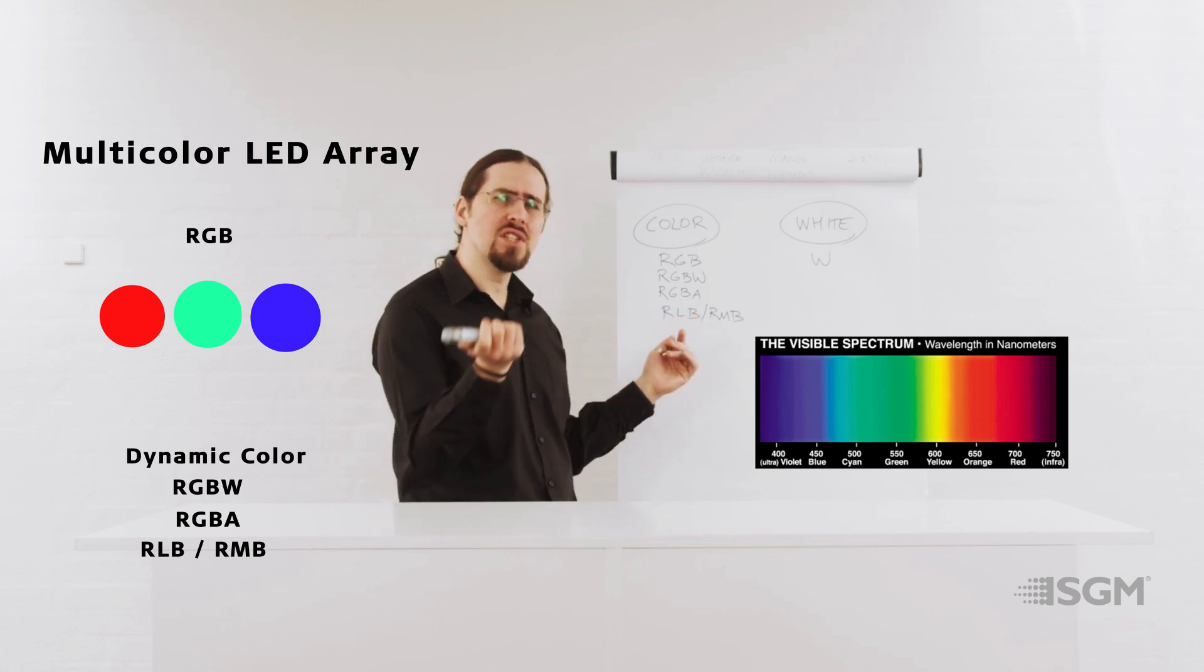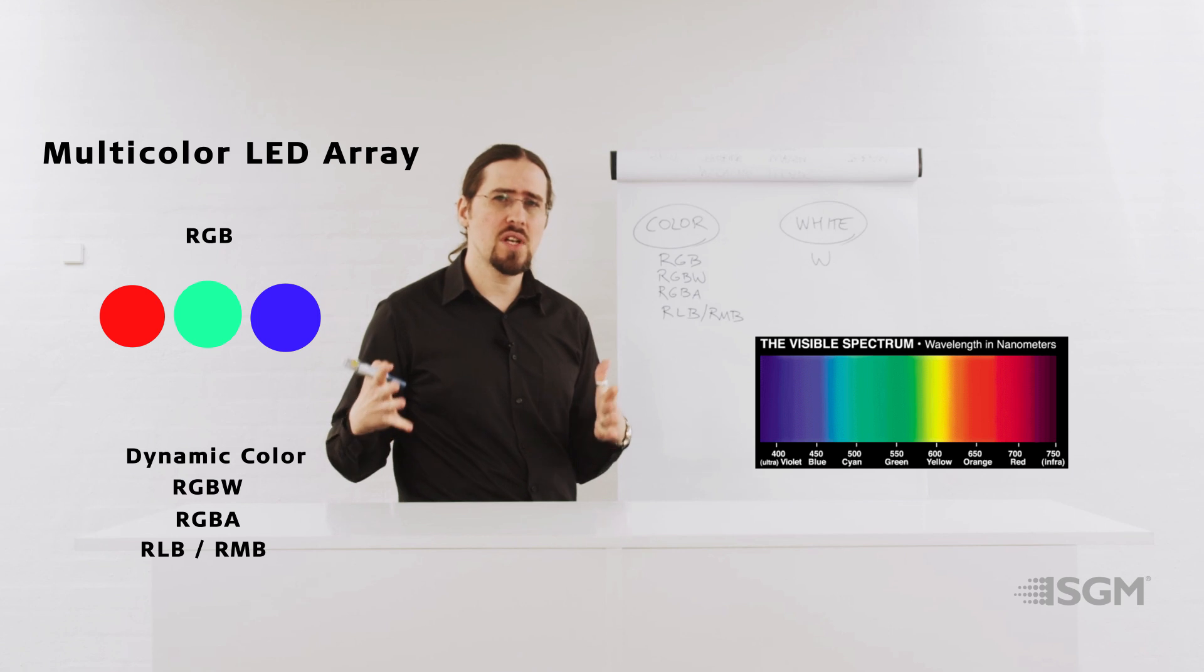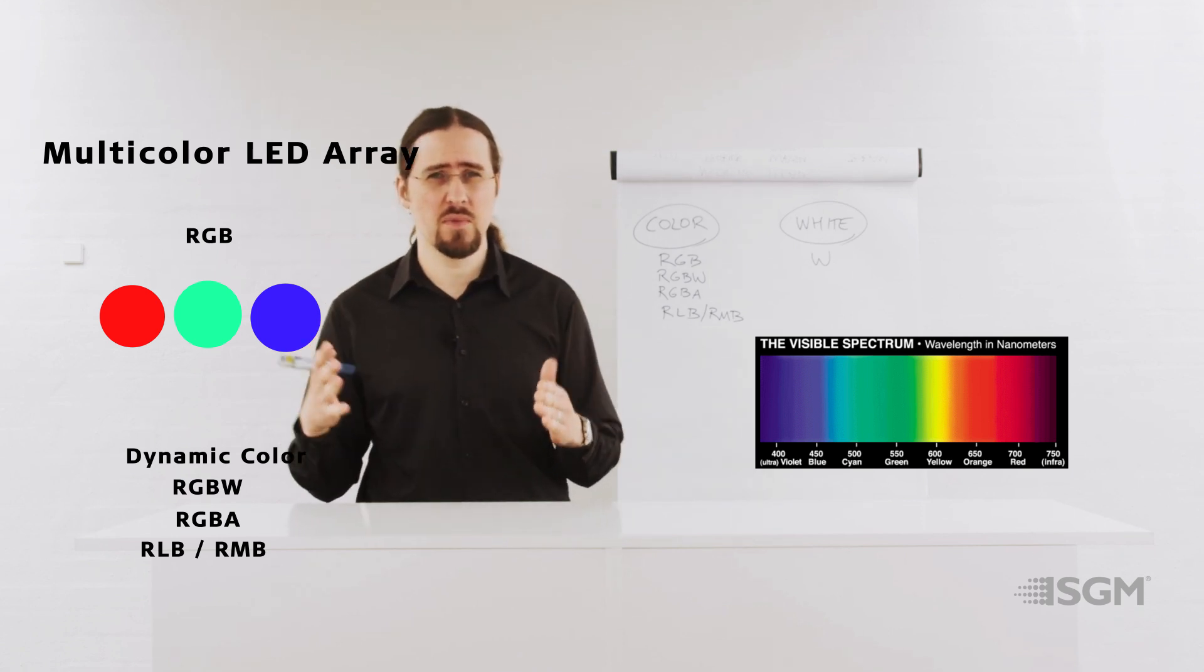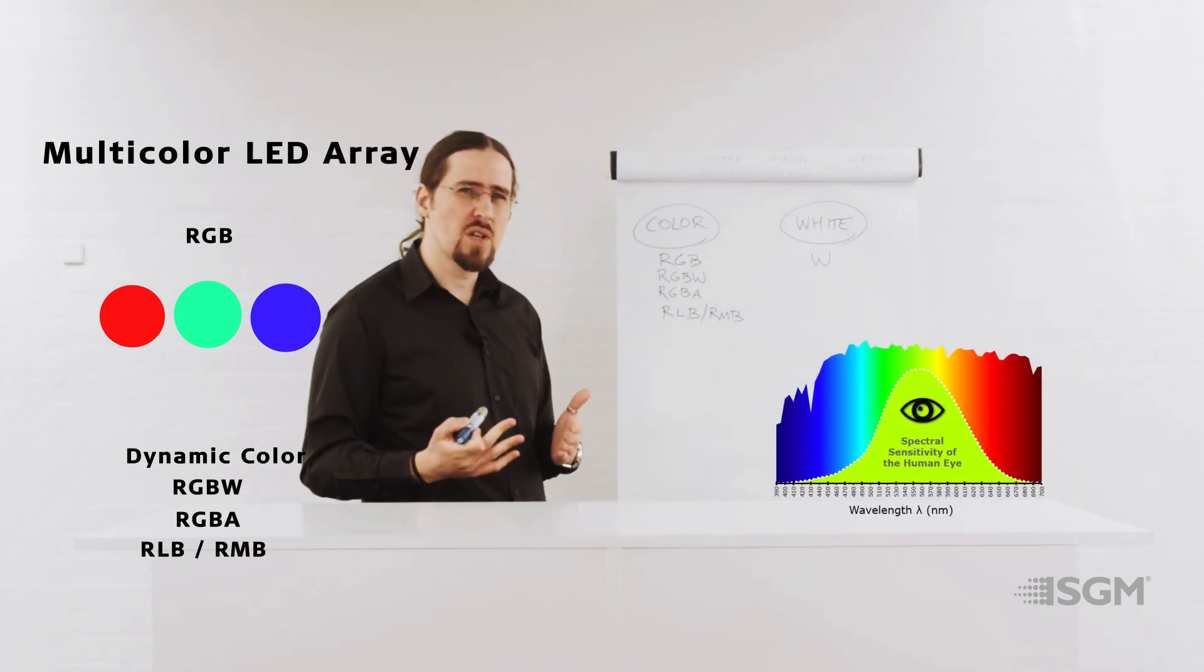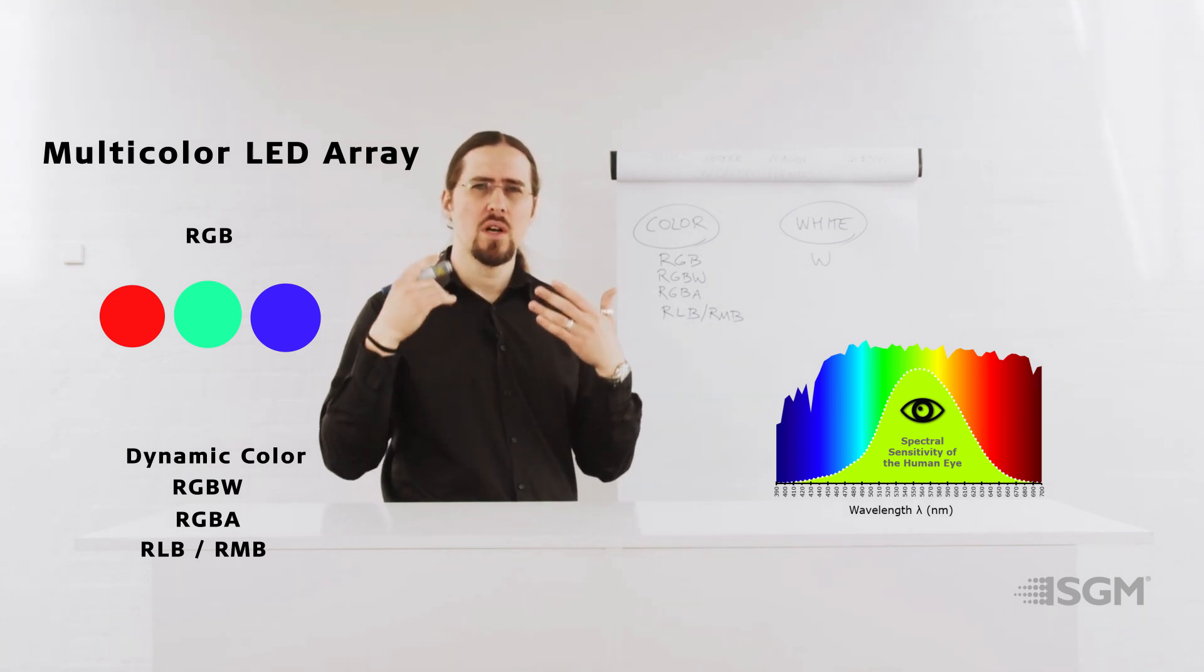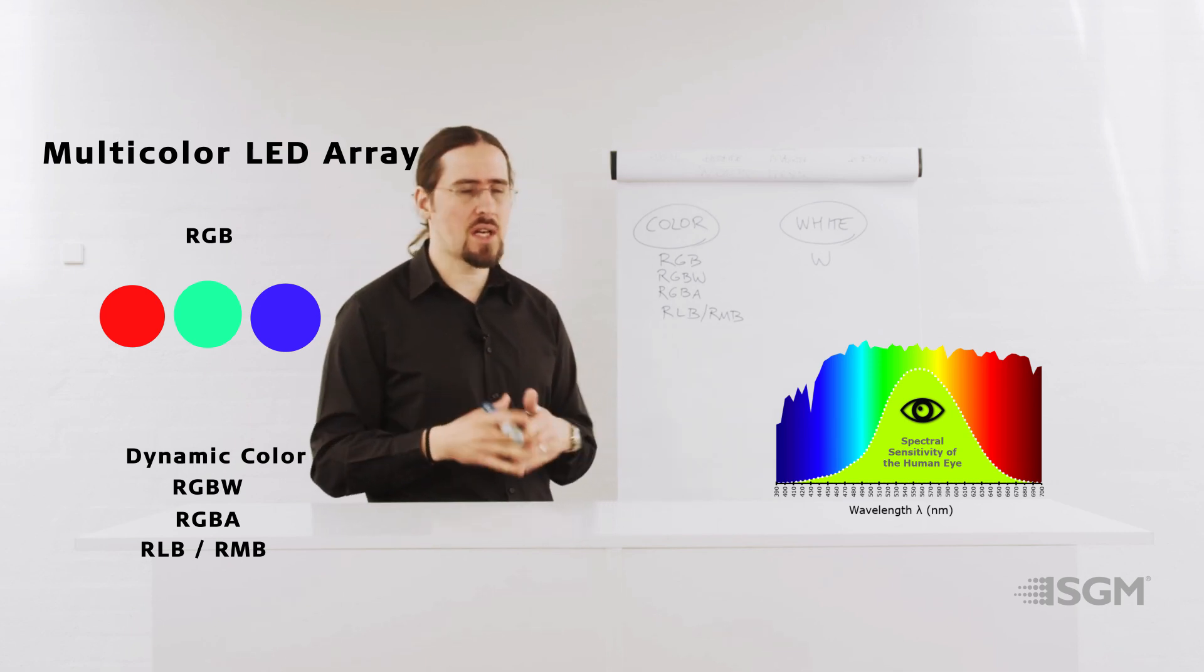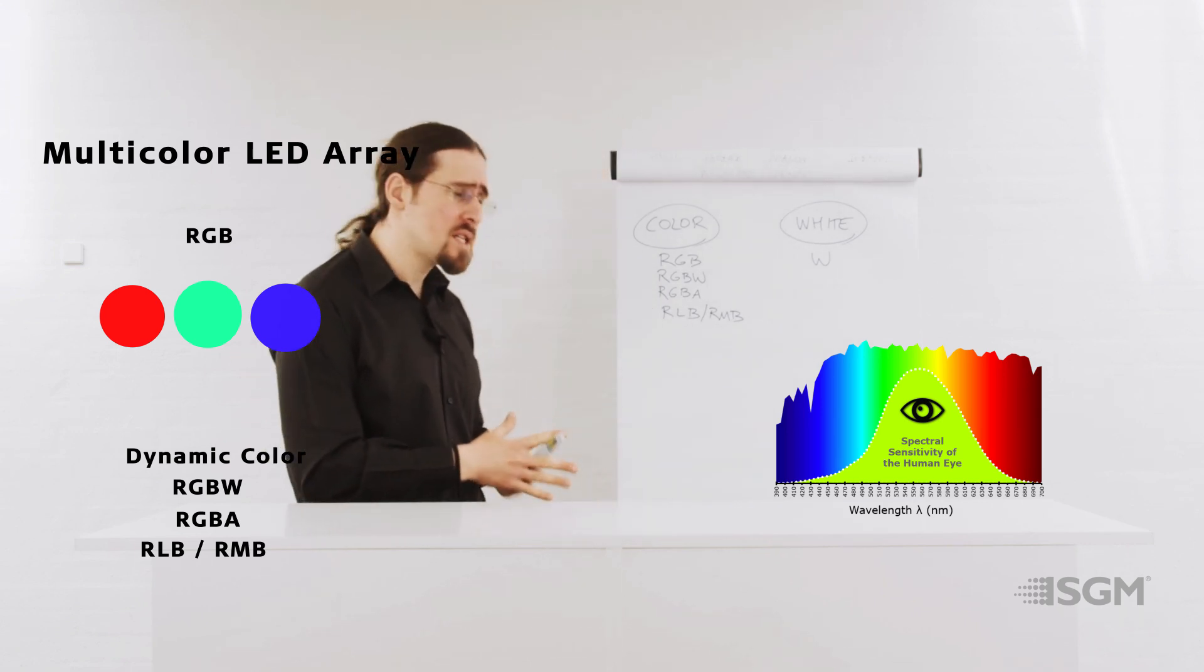So by changing the green into lime or changing the green into mint, what you are achieving is definitely more output. Because that part of the spectrum, and this is related to the photopic curve of our eye, that part of the spectrum will release more output to the eye. Our perception is more suited to perceived light output in this range of colors than if we are using a saturated basic primary green.